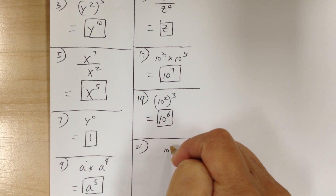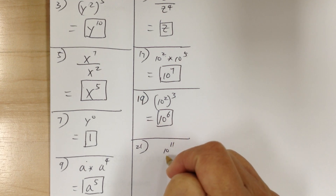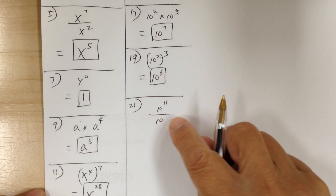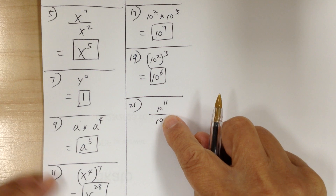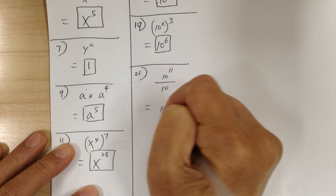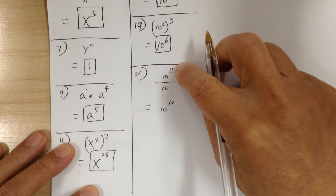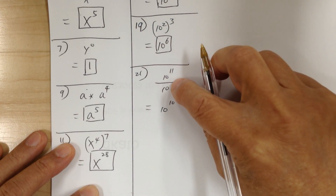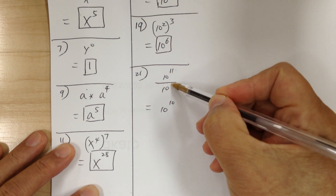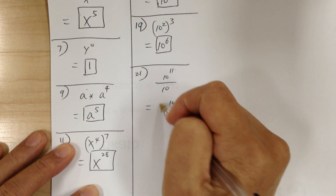You got 10 to the 11 over 10. When you don't see the exponent, it means it's 1. So this will equal 10 to the 10, because 11 minus 1 gives you 10.